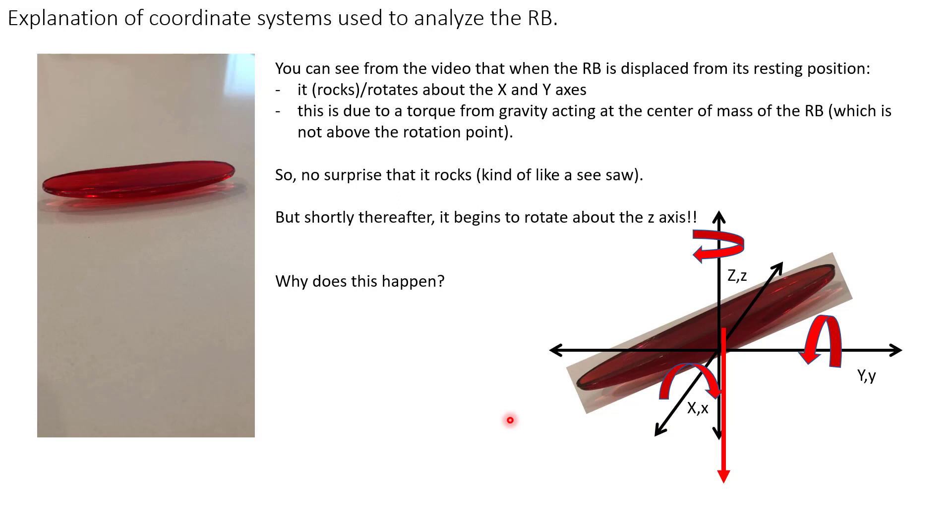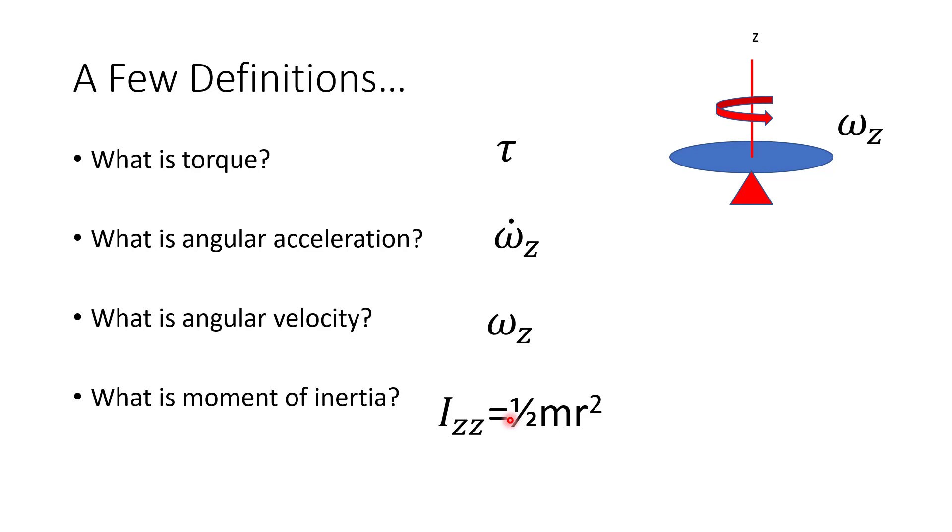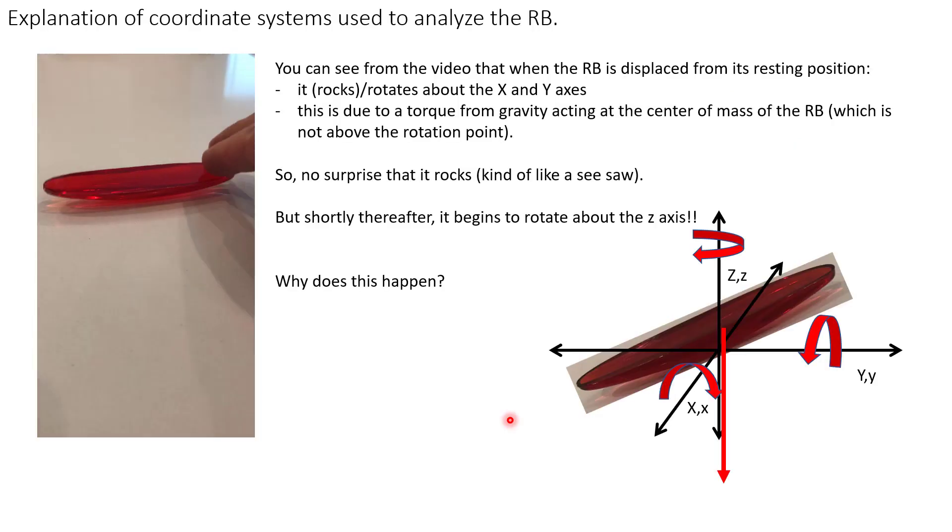The first experiment I did with the Rattleback is this: simply displace it from its resting position, and it rocked initially, and then it started to rotate. Let's watch that again. So it rocked initially like a seesaw, and then it started to rotate. Rocking probably makes sense to you like a seesaw, but rotating is kind of spooky. So, what's going on? This is the Rattleback magic.